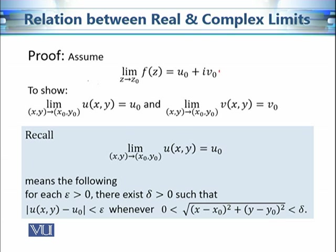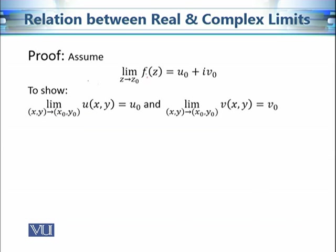Whenever I say that this limit exists, it means it satisfies the definition we described earlier. Similarly, to prove that the real limits hold, we should prove that each limit satisfies that condition. Let's start the proof. It is given that the limit is equal to u₀ plus i·v₀. So this is our given statement, and we can use this fact in our proof.